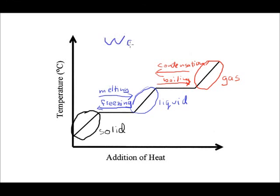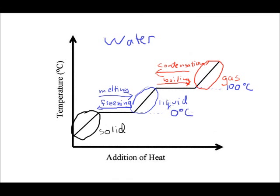Now if we apply this diagram to water, we also want to add in some key temperatures. This process right here is occurring at a temperature of 100 degrees Celsius. Down here on the diagram, we're talking about temperatures of zero degrees Celsius, where we have either that process of melting or freezing.